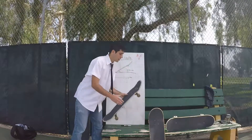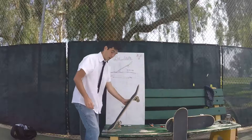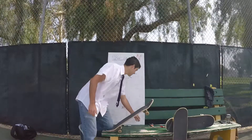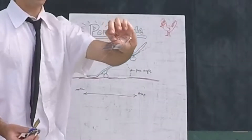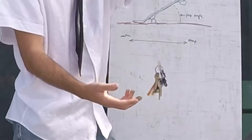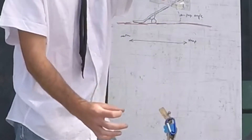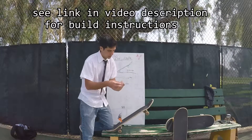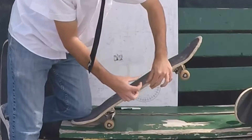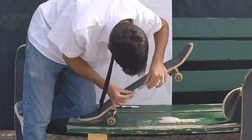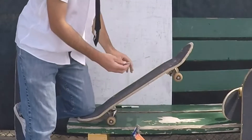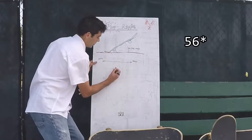We can measure pop angle pretty simply. The way we do that is put our board in the position it would be if you're about to ollie, and then you can take a protractor with a fishing line tied through a little hole right here, and we have some keys on the end of it, which are basically used to act as a weight so that it pulls our string nice and straight. Now if we line up this black line on our protractor with one of the layers of our board, and we do this in a spot on the board where all the layers are straight, we will get an angle — in this case, 56 degrees.